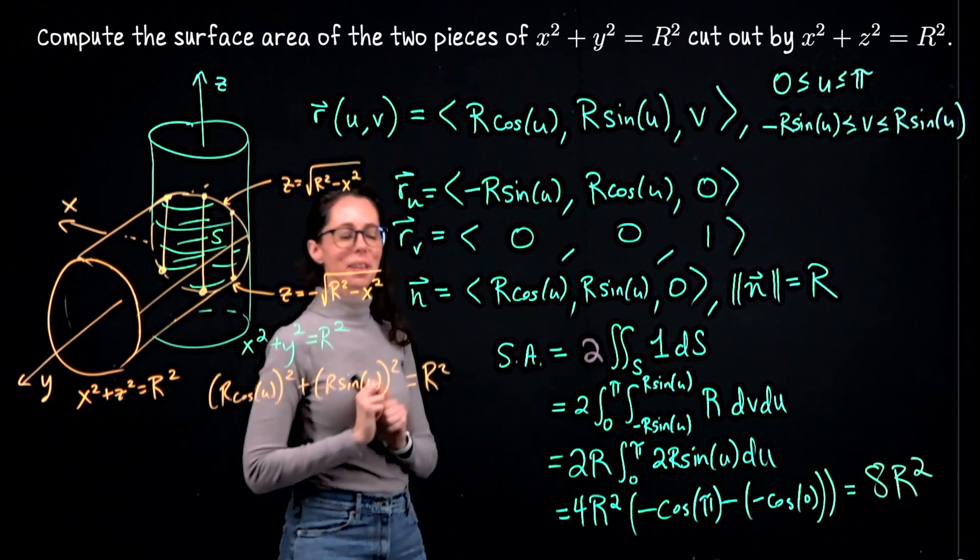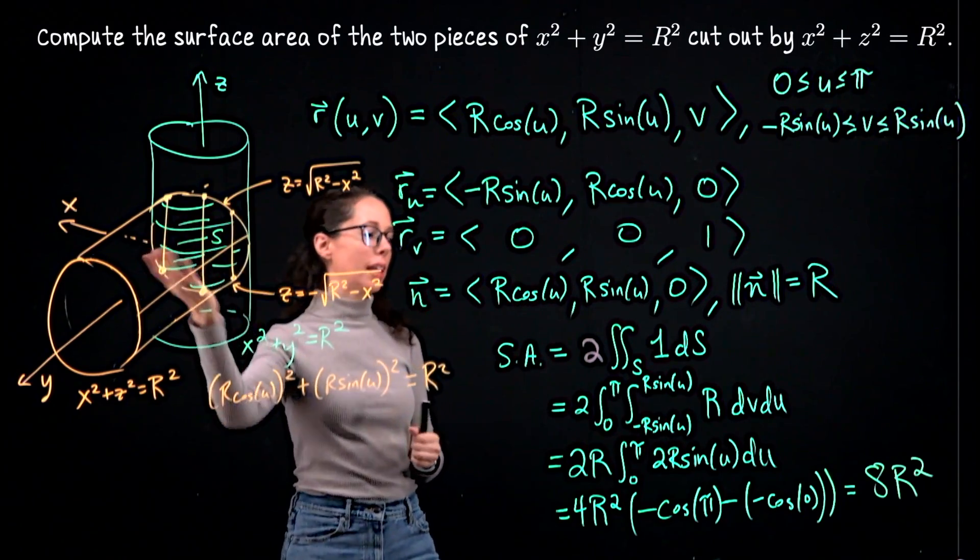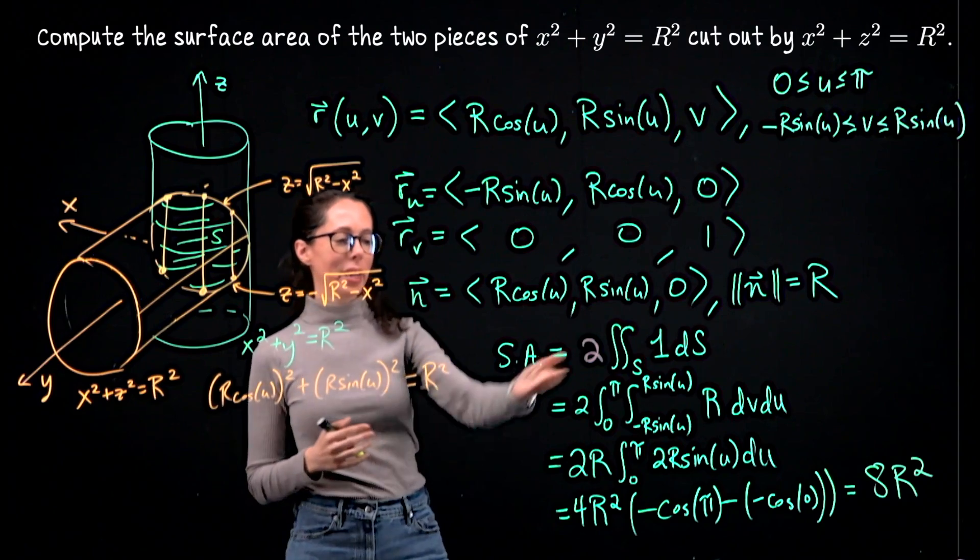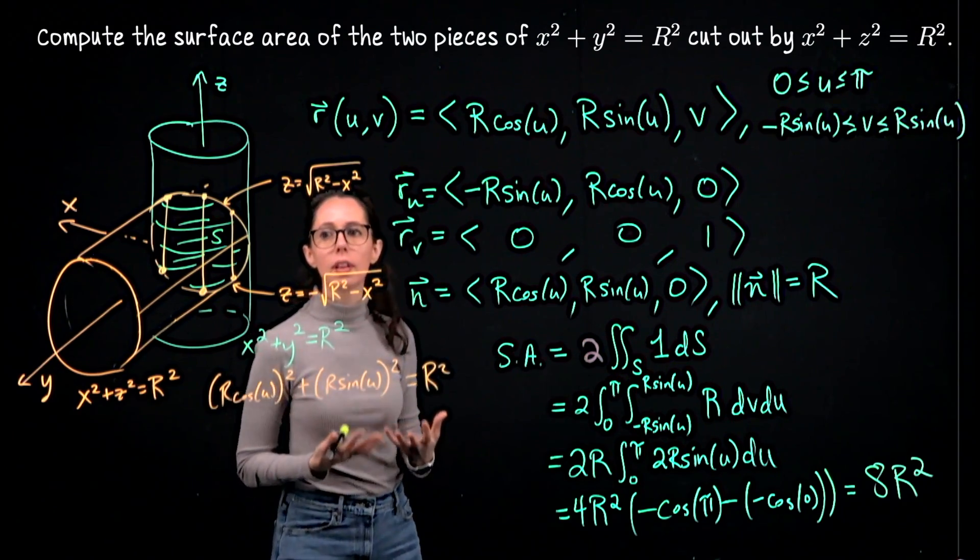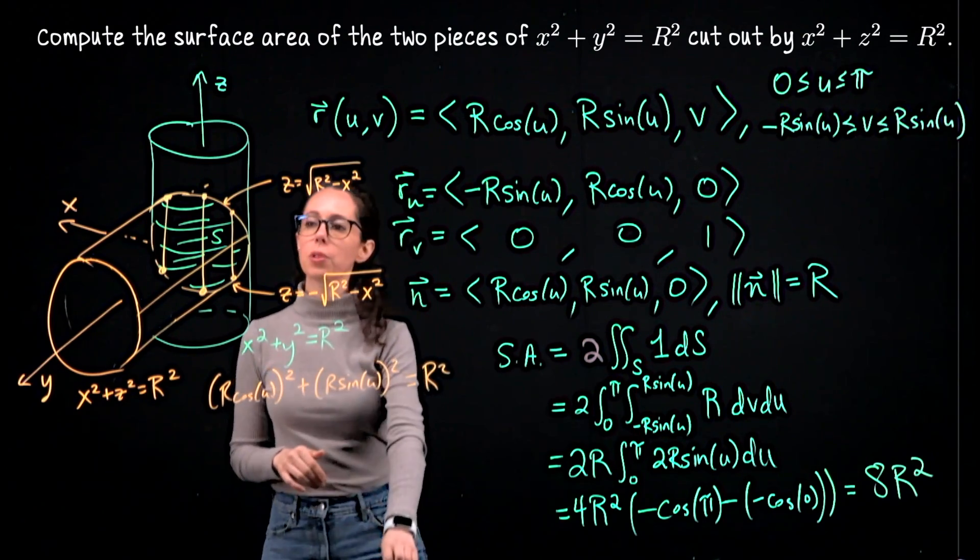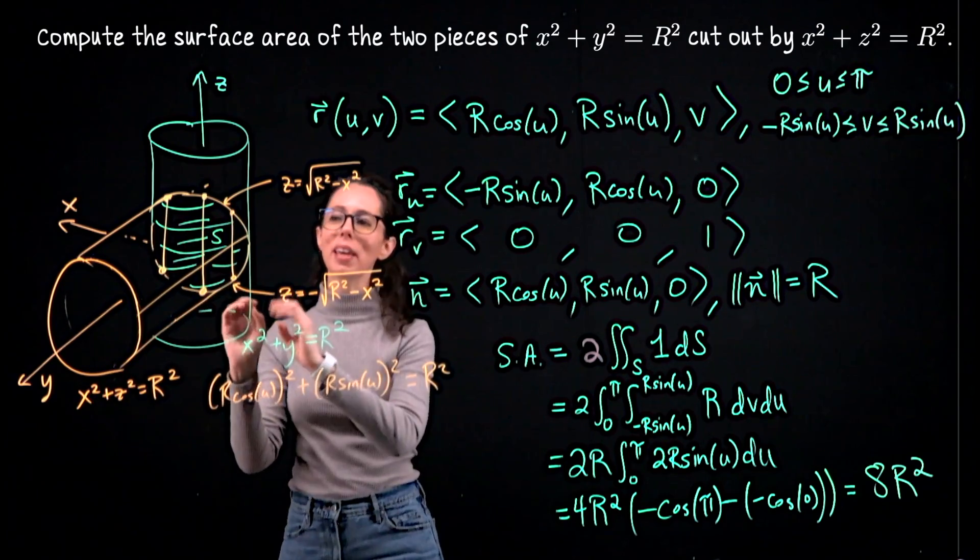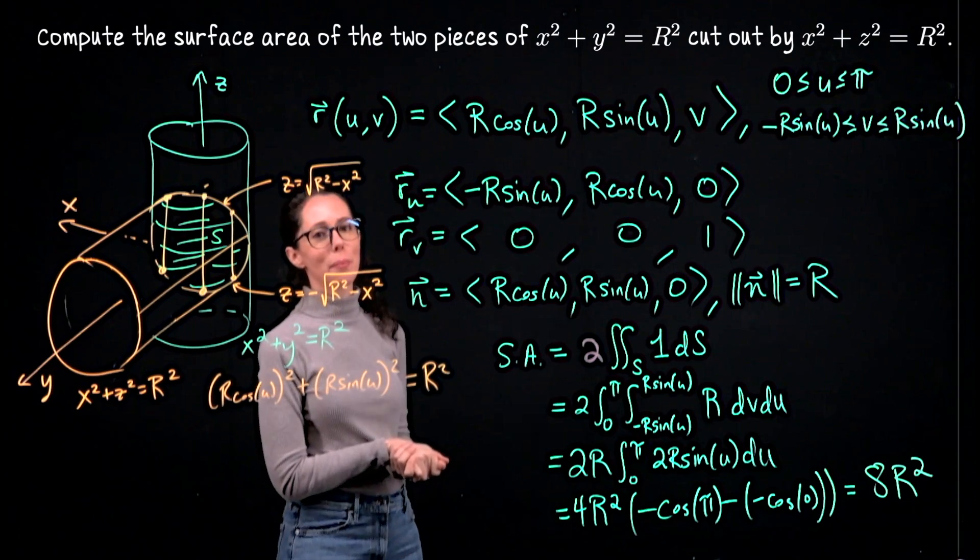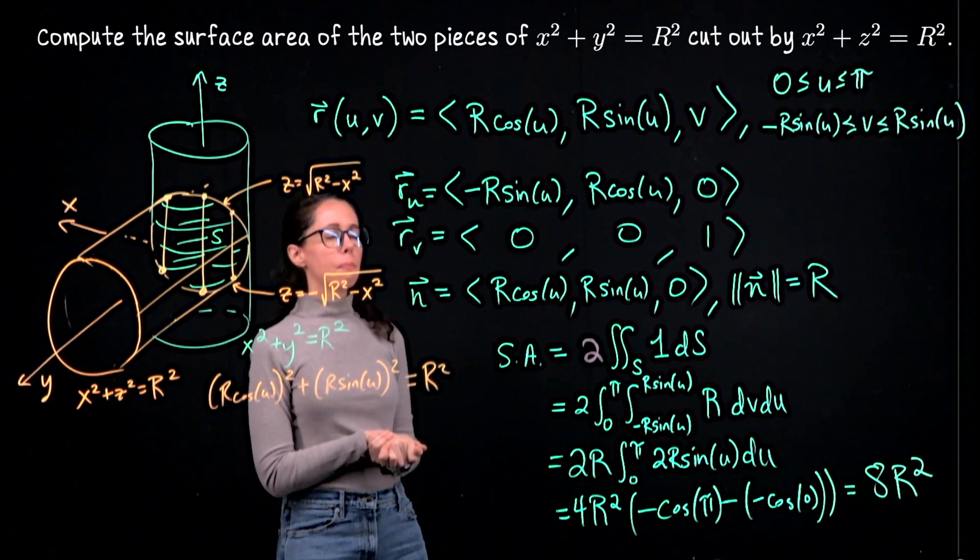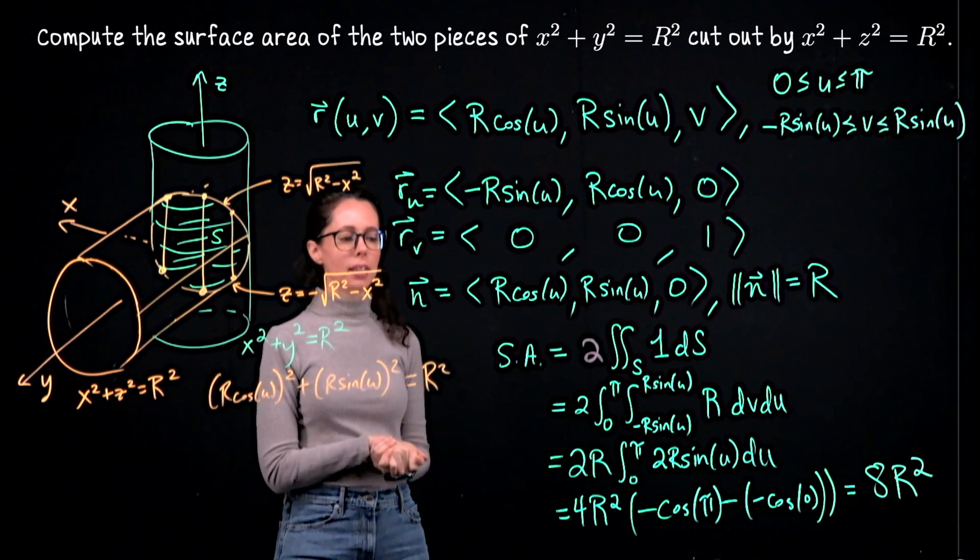Okay, so eight R squared. Each individual face is four R squared. But again, I doubled it to get the full surface area enclosed by the intersection of these two cylinders. So one that I drew kind of facing me and one which is hidden in this picture on the back.